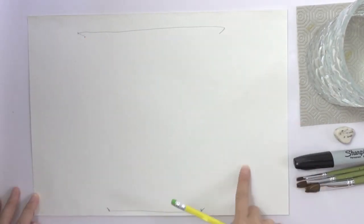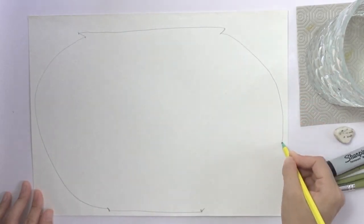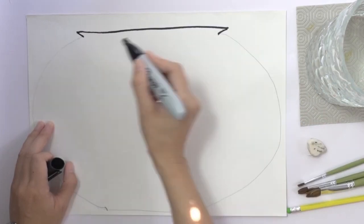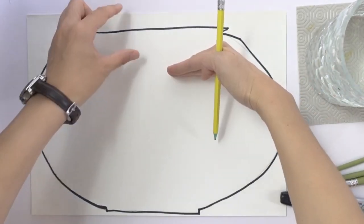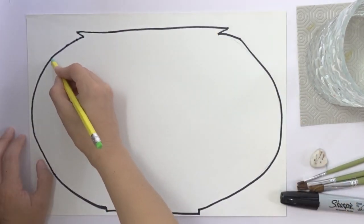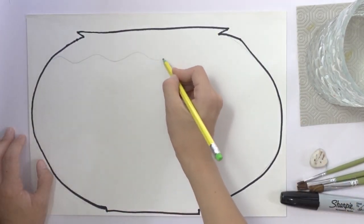Draw two curved lines on both sides to connect the diagonal lines. Then we trace these edges with marker. Near the upper part of the fish tank, draw a wavy line which is the water inside.